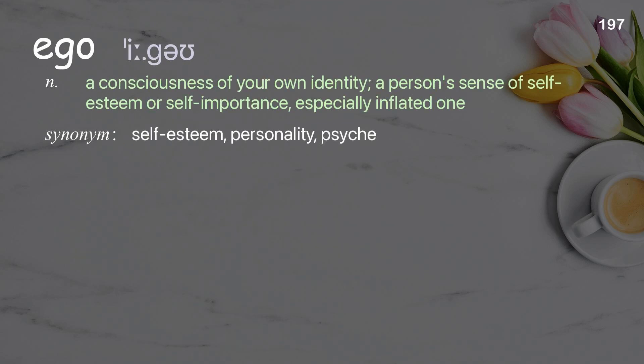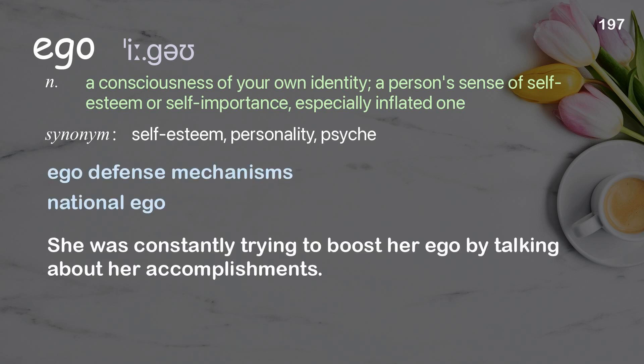Ego: A consciousness of your own identity; a person's sense of self-esteem or self-importance, especially an inflated one. Examples: Ego defense mechanisms. National ego. She was constantly trying to boost her ego by talking about her accomplishments.